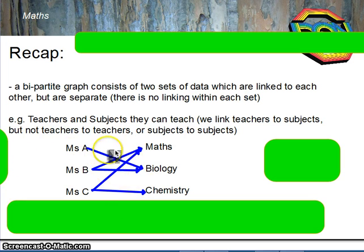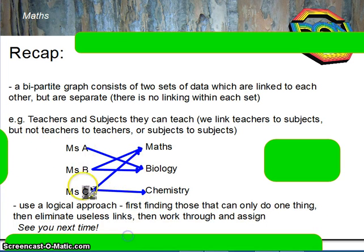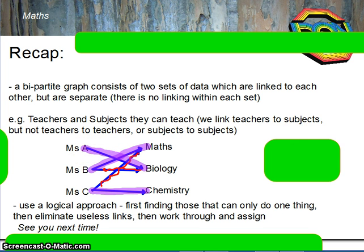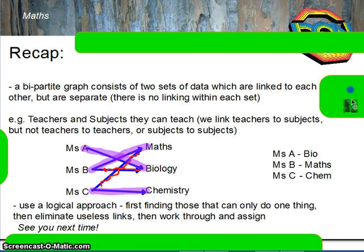If we're trying to solve this problem, use a logical approach — first finding those that can only do one thing, or those things that can only be done by one person. In this case, Chemistry can only be done by Ms. C, so cross out the useless edge, meaning Maths can now only be done by Ms. B, cross out that useless edge, meaning Ms. A must do Biology. And there is our final assignment.